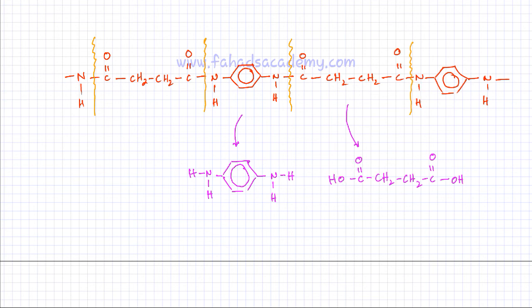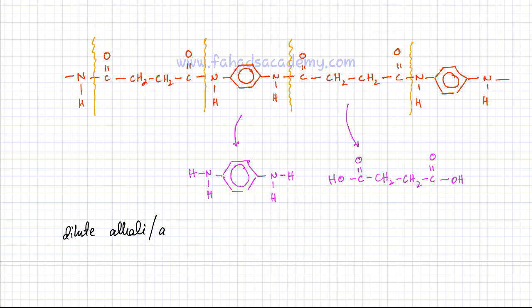Lastly, we'll study the conditions needed for hydrolysis. Generally, dilute alkali or acid plus heat is sufficient to break down a polyamide. If you're breaking down proteins into their individual amino acids, you can also use concentrated HCl.